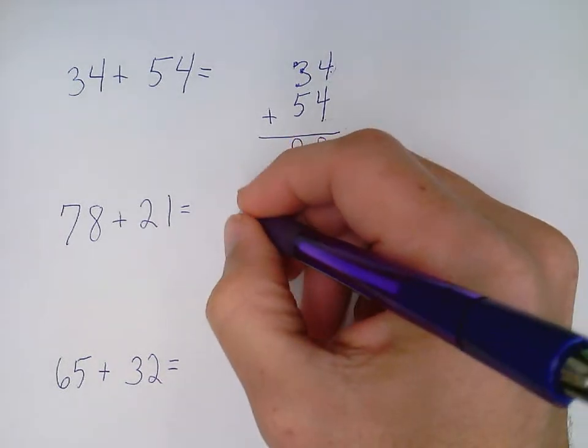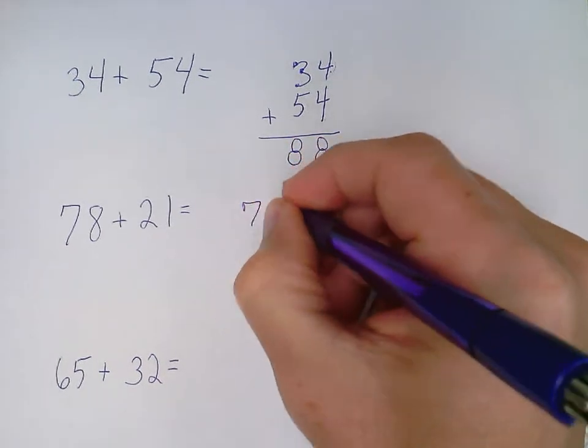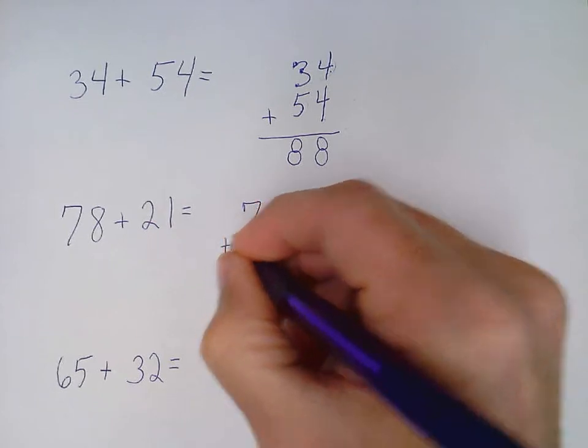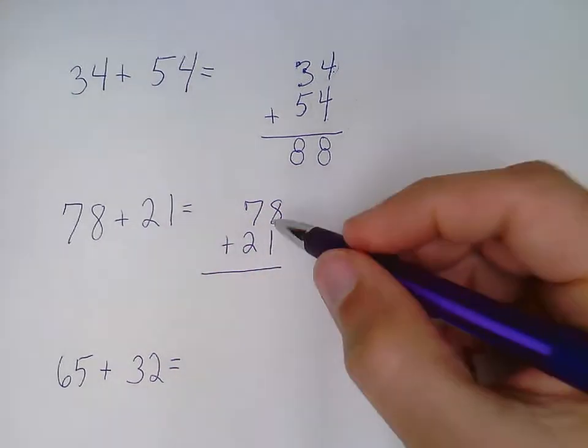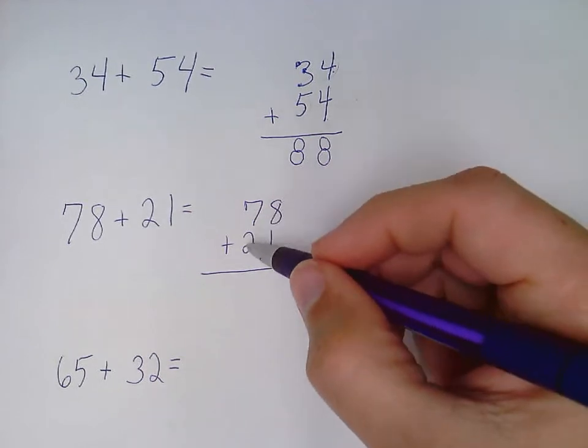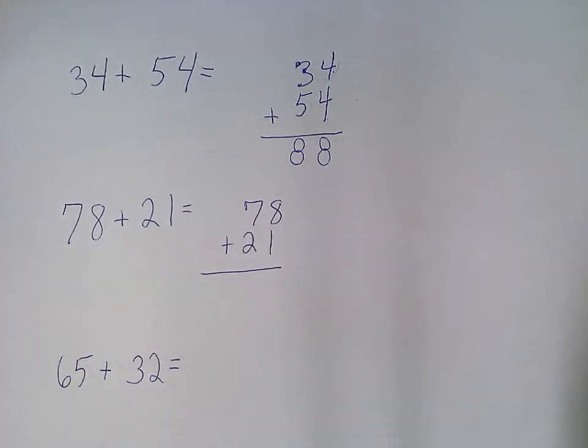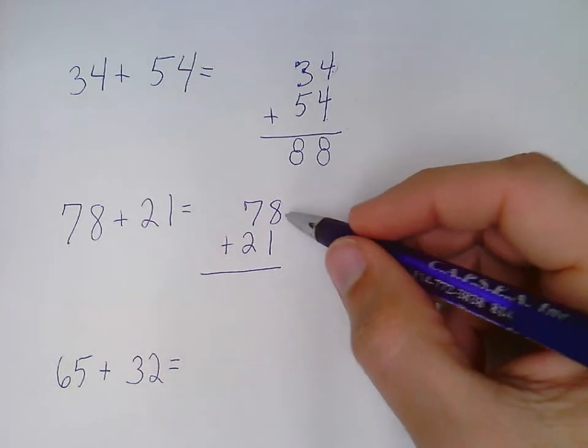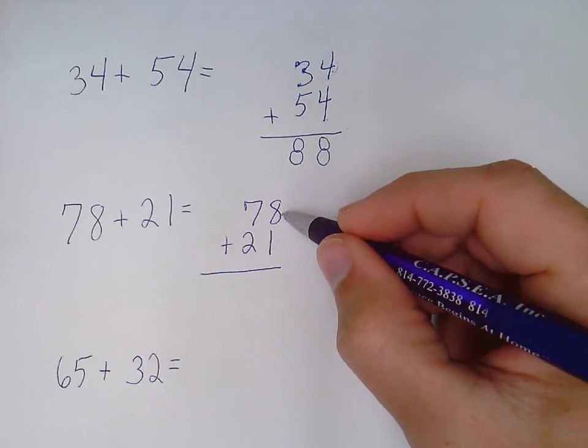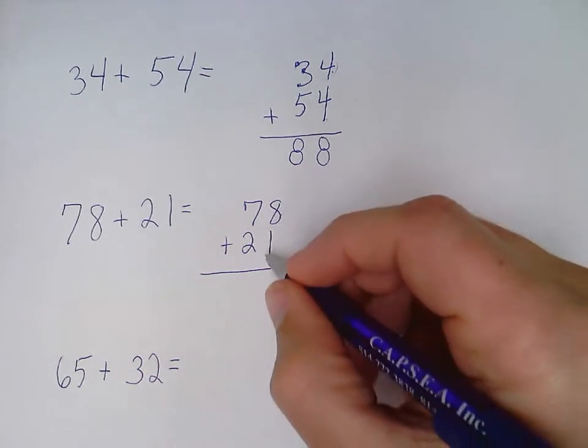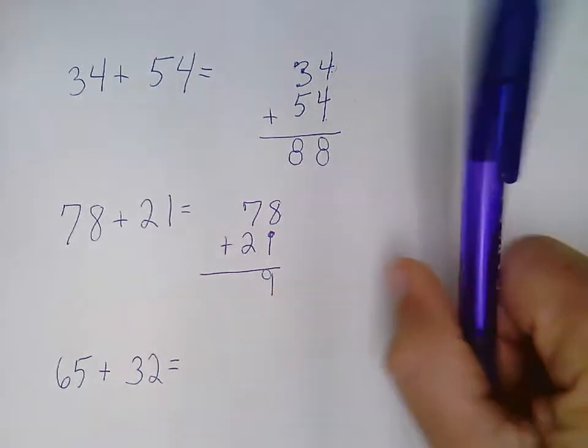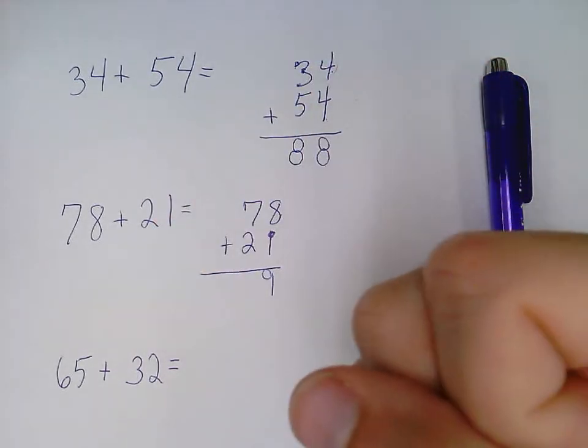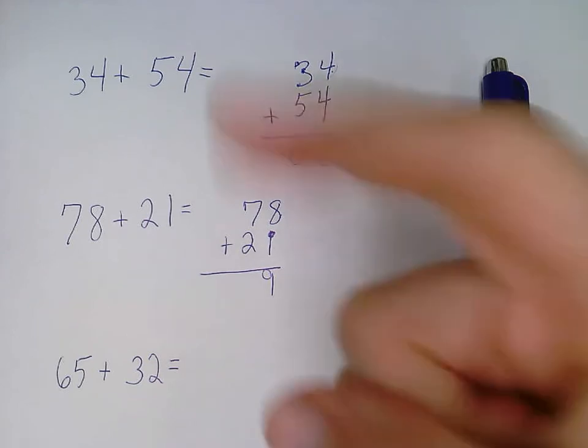This next one, same exact thing. 78 plus 21. I want to make sure my ones are lined up with my ones and my tens are lined up with my tens. If they're not lined up, I cannot get the correct answer. I can add this ones column first. Circle 8 and then use my touch dots on the 1: 9. Or grab the big number 8, count on with my little number: 9.